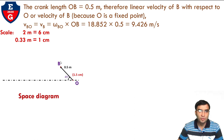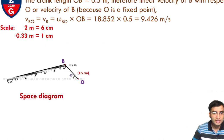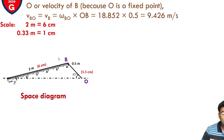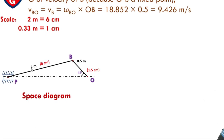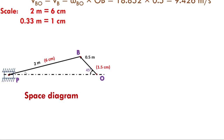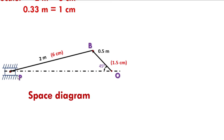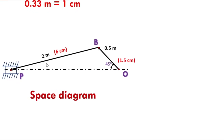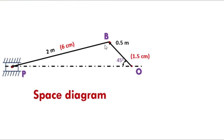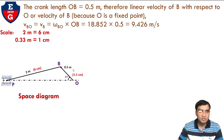The end of the crank gives point B. OB is the crank link. For the connecting rod, its length is 2 m = 6 cm on scale, so draw this line 6 cm long to get the piston point P. PB is the connecting rod length, OB is the crank, and P is the piston point. The space diagram is now complete.